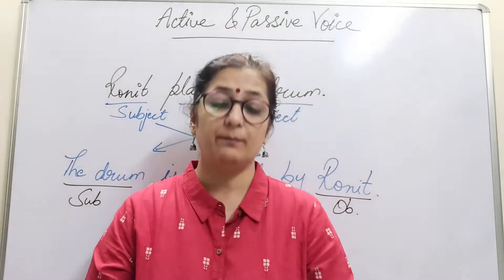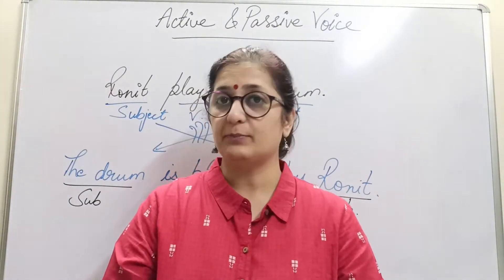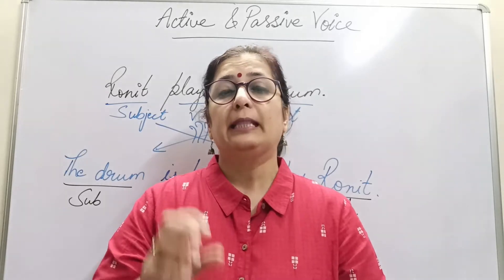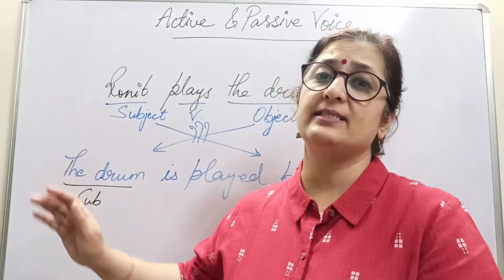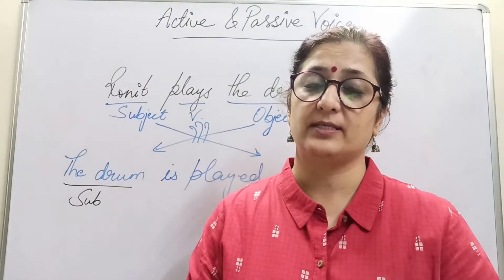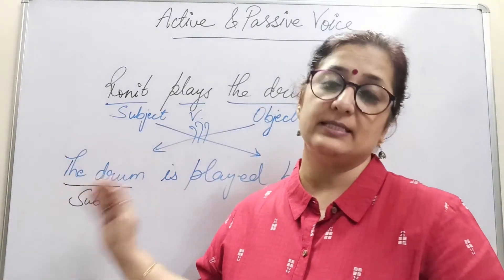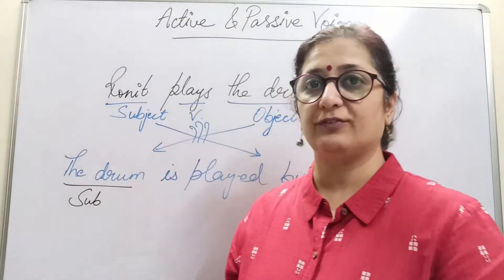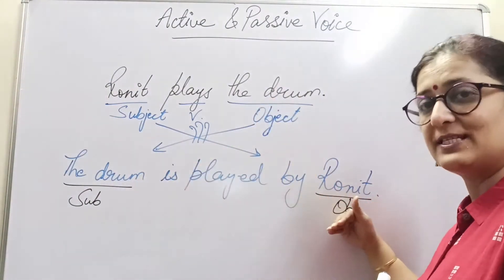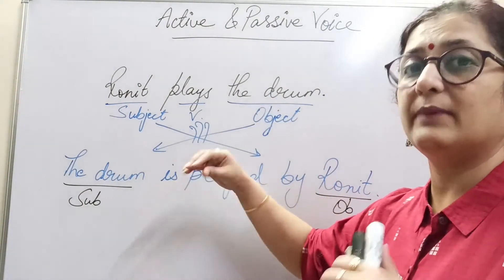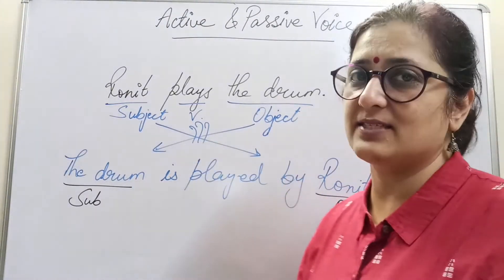When the main person doing the action — the subject — is in the beginning of the sentence, that is an active voice sentence. An active voice sentence is when the main doer is at the beginning. If we change it so the main doer moves to the other side, that becomes the passive voice.